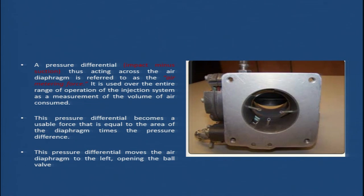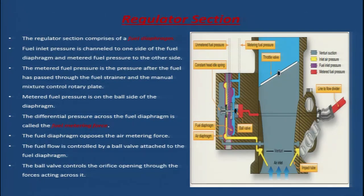The air metering force — impact pressure minus suction pressure acting across the air diaphragm — is used over the entire range of operation of the injection system as a measurement of the volume of air consumed. This pressure differential is a usable force equal to the area of the diaphragm times the pressure difference, and it moves the air diaphragm to the left, opening the ball valve.